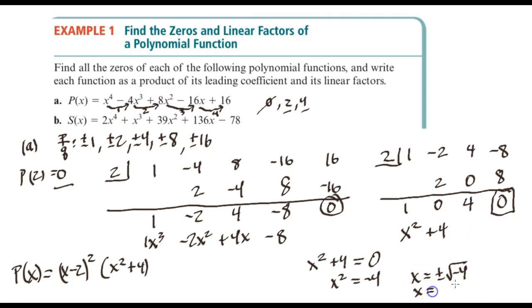So this tells us that this factors to... So we have (x minus 2) squared (x plus 2i)(x minus 2i). Alright. So there we go. We have the following factorization. And from this, we can find all the zeros. So what we've done is we wrote each function as a product of its leading coefficient and linear factors.